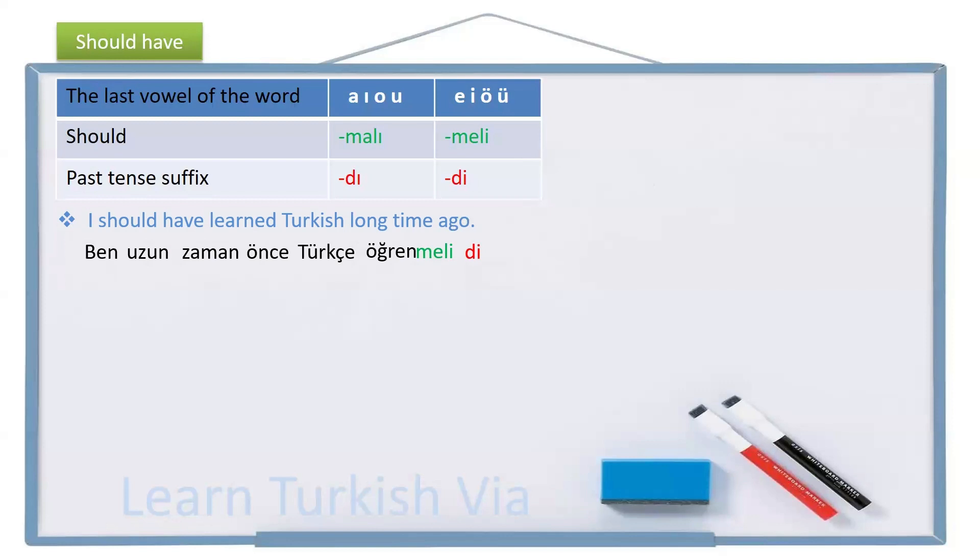And I see there are two suffixes here and the first one is ending with a vowel. So, I need a buffer letter here, which is y. Öğrenmeliydi, should have learned. Who? I should have learned. So, I need the personal pronoun suffix. In the end, öğrenmeliydim. I should have learned. I should have learned Turkish long time ago. Ben uzun zaman önce Türkçe öğrenmeliydim.